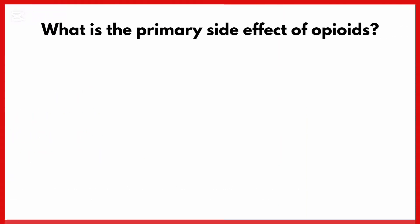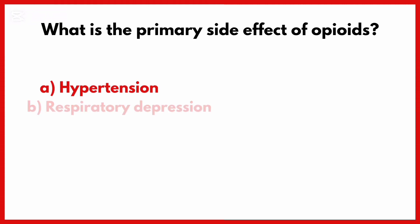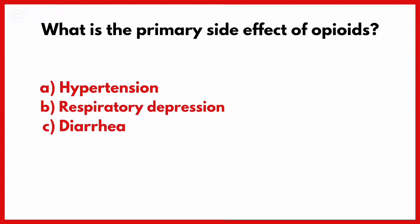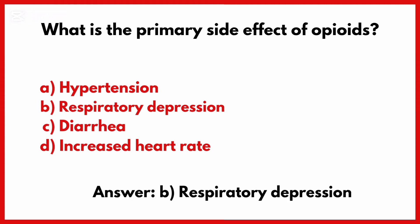What is the primary side effect of opioids? Correct answer is option B: Respiratory depression.